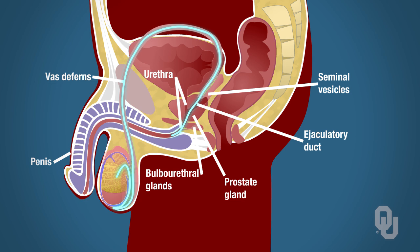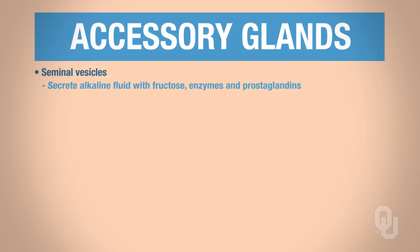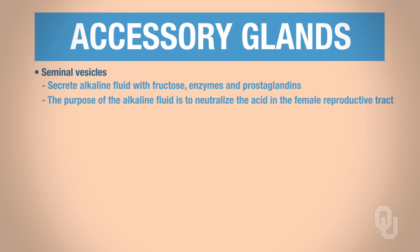Now let's look more closely at the accessory glands. The seminal vesicles secrete an alkaline fluid that contains fructose, enzymes, and prostaglandins. Remember, alkaline fluids are basic. The purpose of this alkaline fluid is to neutralize the acid that is in the female reproductive tract. The fructose is used for energy — remember, sperm have to swim, so they need energy for motility. The enzymes in the fluid facilitate semen clotting. There are also prostaglandins in this fluid, which are for motility and viability of the sperm.